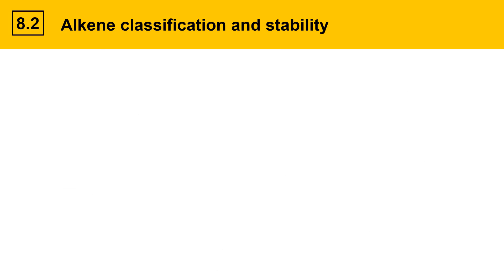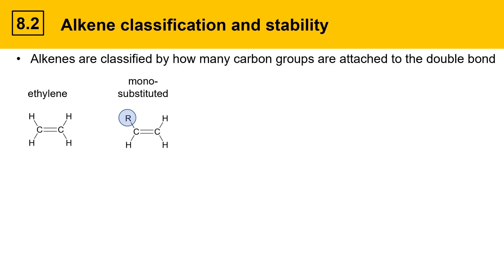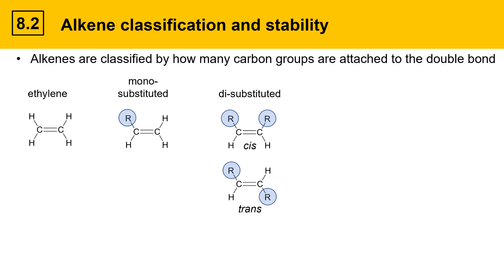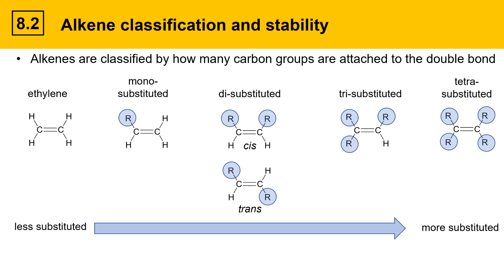Alkene classification and stability are based on substitution — specifically, how many carbon groups are attached to the C=C double bond. Ethylene is the simplest alkene, with only hydrogens attached and no carbon groups on the double bond. When one carbon group is attached it is called a monosubstituted alkene. Disubstituted alkenes can be cis or trans. Trisubstituted alkenes contain three carbon groups, and the most highly substituted are tetrasubstituted, where the double bond has four carbon groups attached.